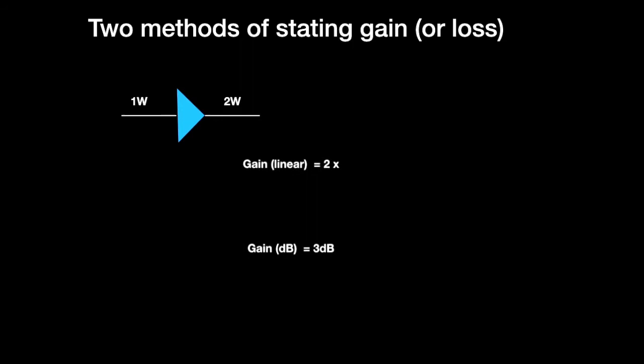So there we are. There are the two representations again. For that amplifier with 1 Watt in and 2 Watt out, then the gain expressed as a linear gain is 2 times, or the gain in dB is 3 dB.